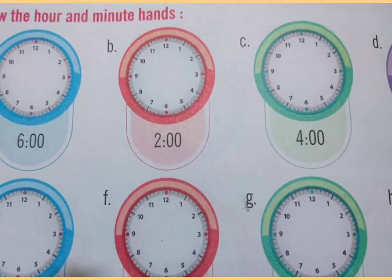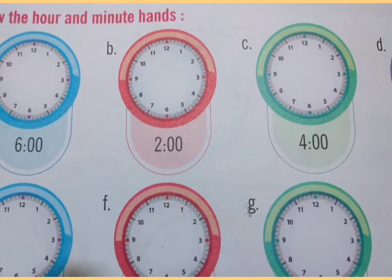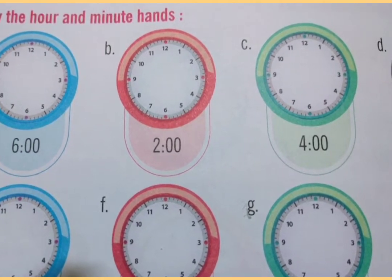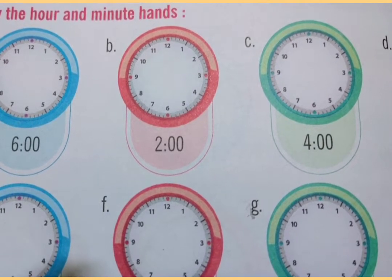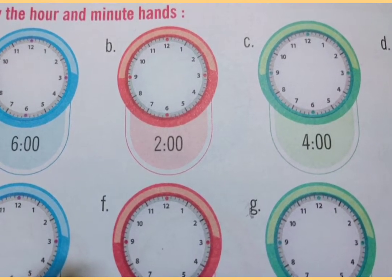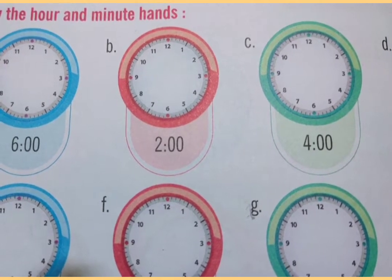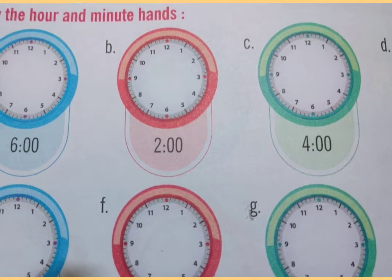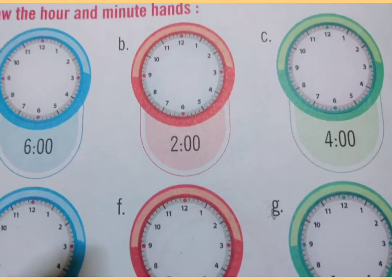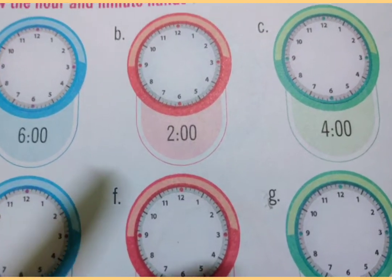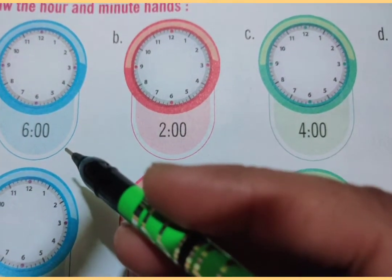On page number 90, the question is: draw the hour and minute hands. You know that hour and minute hands — we learned about those yesterday. So we can draw the minute hand and hour hand in these watches. Now let me start. Part A: the given time is six o'clock.